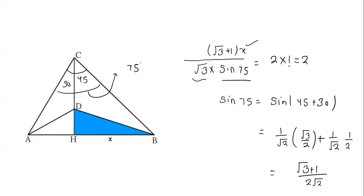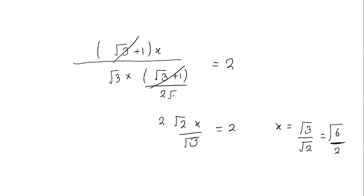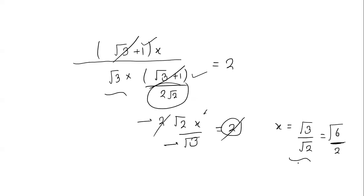Here 2 × 1 = 2. We calculate sin 75 = sin(45 + 30) using the formula sin A cos B + cos A sin B, giving sin 45 cos 30 + cos 45 sin 30 = (√3 + 1)/(2√2). The (√3 + 1) terms cancel, and after simplification X = √3/√2 = √6/2.